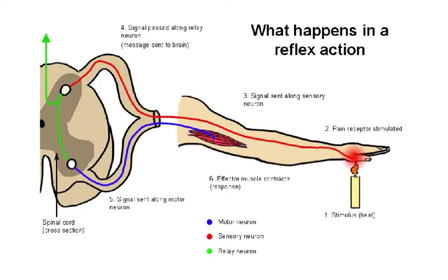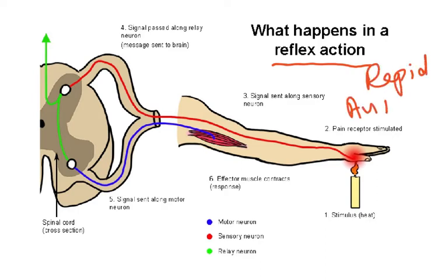A reflex action is a rapid and automatic response to a stimulus — for example, touching something hot and withdrawing your hand. Number one: it is very rapid. Number two: it is automatic, meaning you do not have to think about it. It happens on its own.